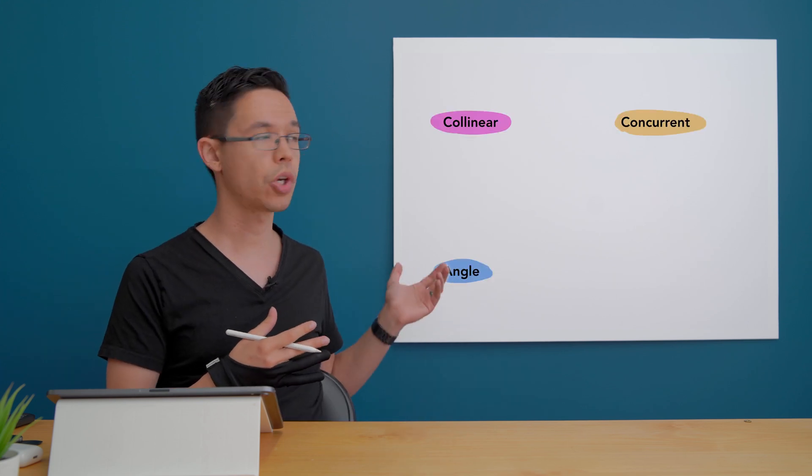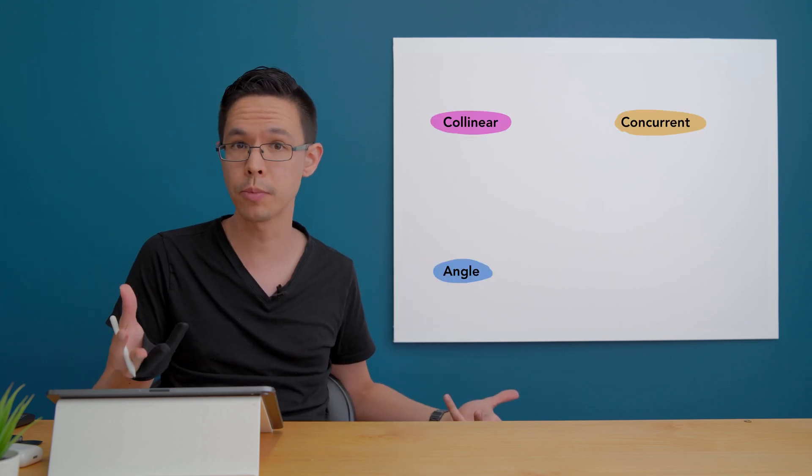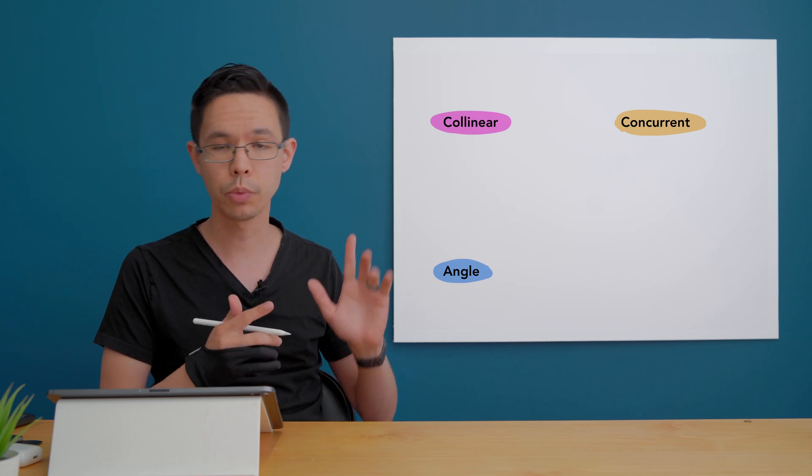So we're actually going to move up to some terms here that refers to a collection of objects. So here we've got collinear.